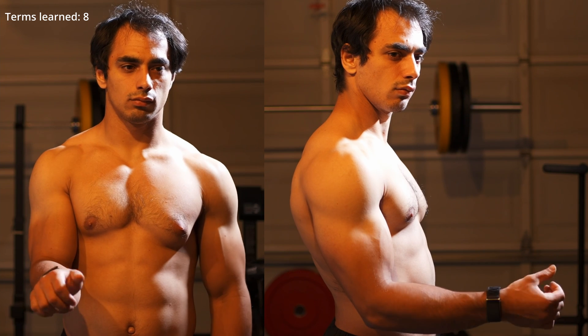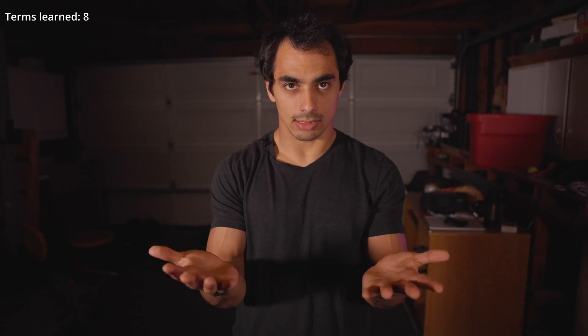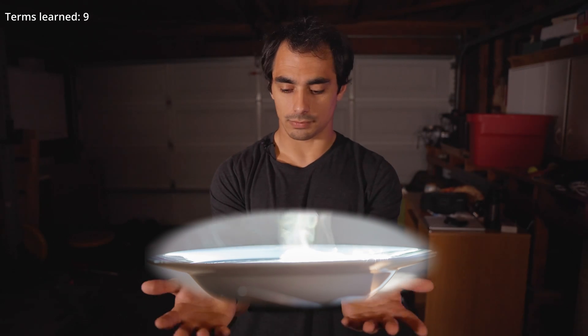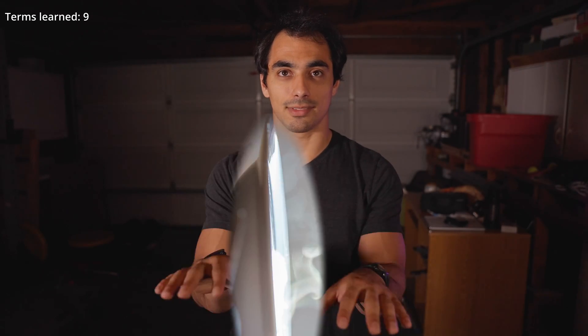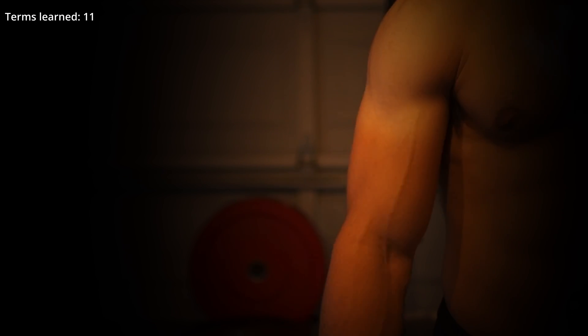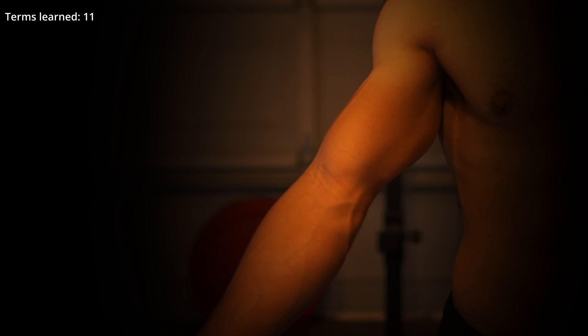The forearm has pronation and supination. The way I remember it: supination is holding a bowl of soup — we're holding sup. And pronation is just not holding sup. We also have internal rotation and external rotation.